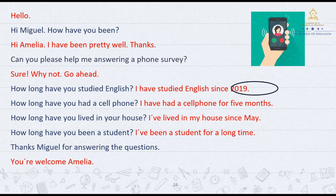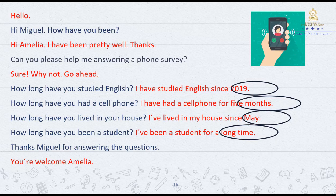Now we are going to see the examples Miguel gave in his answers. He said: I have studied English since 2019 — 2019 is a specific point in time. I have had a cell phone for five months — five months is a period of time with a number and a time word. I've lived in my house since May — May is a specific point in time. I've been a student for a long time — a long time is a period of time, not a specific saying.